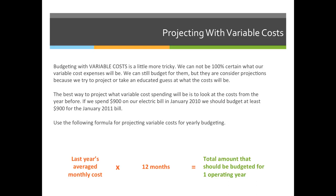Some companies will even say every year energy cost goes up 10%, so they'll actually budget $990 because that's 10% more than the year before. For our purposes, we're just going to budget based on the previous year's costs. When we do this, we're going to use the following formula for projecting variable costs for a yearly budget.